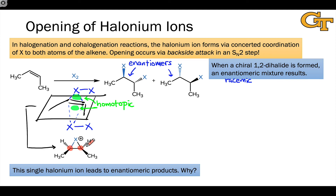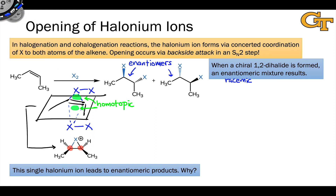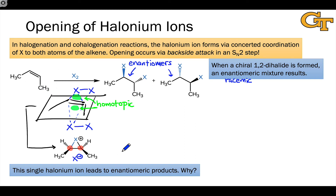Addition of X to form the halonium ion has destroyed the rotational symmetry that was present in the original alkene. Now we have just a reflection plane of symmetry running right through the middle of the molecule right here. That reflection plane exchanges these two carbons highlighted in red without changing the appearance of the molecule as a whole.